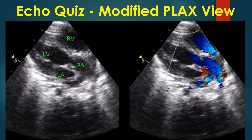The great vessel can be clearly seen as bifurcating into two branches. This appearance is characteristic of the pulmonary artery. When the aorta is imaged distally, the arch with great vessels will be seen.